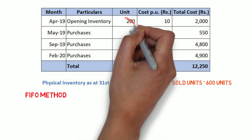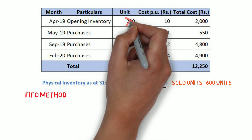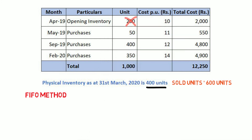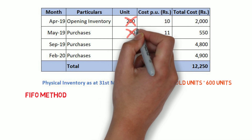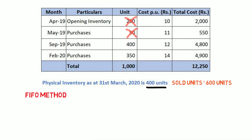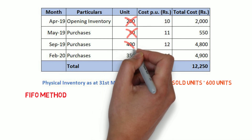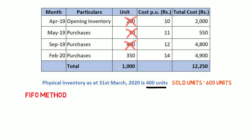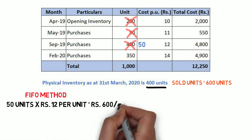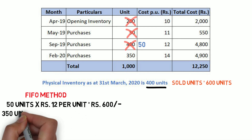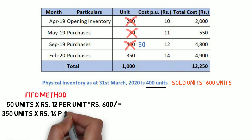The 600 units sold would be exhausted using the April 2019 inventory, May 2019 inventory, and 350 units from the September 2019 inventory. The only inventory remaining is 50 units from the September 2019 inventory. Here is how closing stock is valued using the FIFO method.